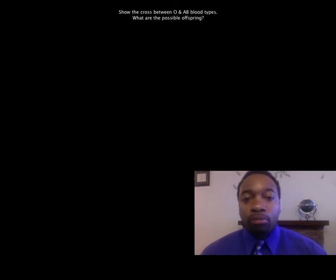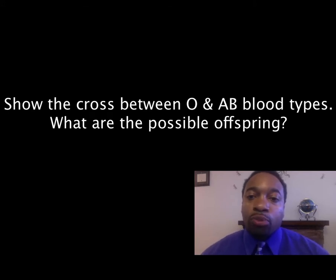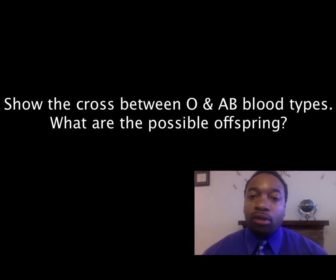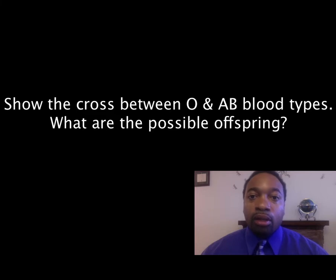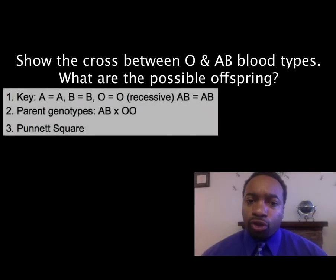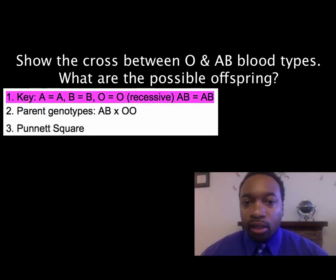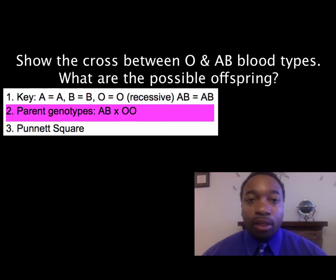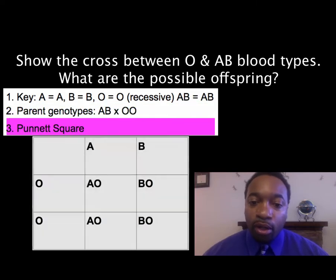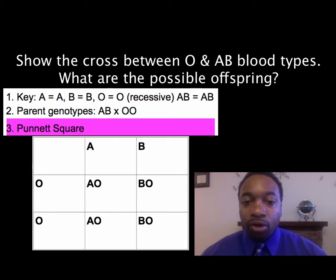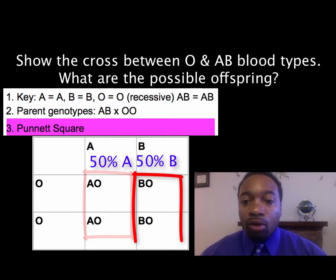Let's solve a problem. Show the cross between an O blood type parent and an AB blood type parent. Show the possible offspring and give the genotypic and phenotypic percentages. Pause the video, solve the problem, and then unpause when you're ready to review the answer. The solution is straightforward. For AB, the only genotype is AB. For O blood type, it's OO. Filling out the Punnett square, we find that half of the offspring are going to be blood type A, and half are going to be blood type B.